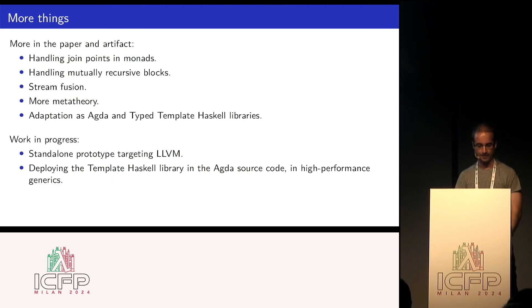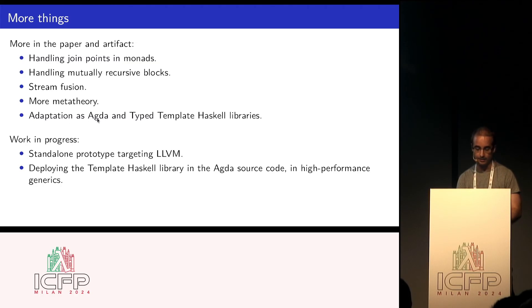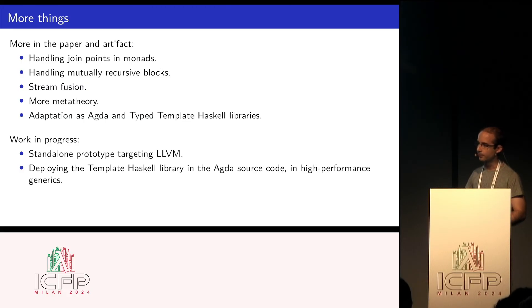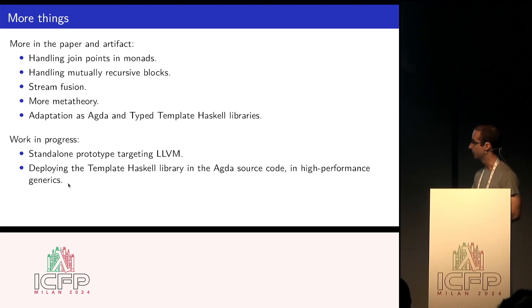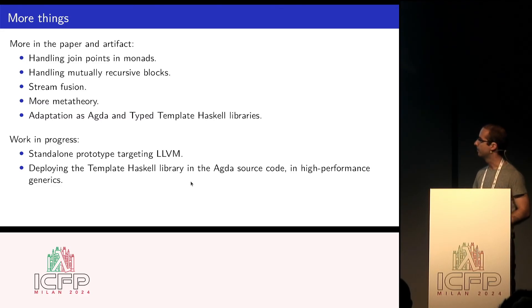So that's the basic idea. More things in the paper: we can also handle join points, mutual recursive blocks, stream fusion, and more monad transformers. There's also an adaptation as Agda and template Haskell libraries, which is a lot more noisy and slightly incomplete compared to what's formalized in the paper. To remedy that, the work in progress is making a standalone implementation targeting LLVM. I'm also experimenting with trying to use this in the Agda codebase to do some kind of high-performance generics implementation, hopefully speeding up some parts of Agda.